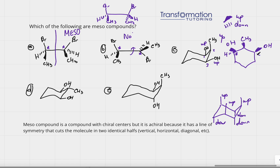Now looking at the middle carbon — carbon two — it has CH3 and a hydrogen, but going left and right leads to the same thing: a carbon with OH, then carbon, carbon, carbon. So going both directions is identical, meaning carbon two is not a chiral center. There are only two chiral centers in this molecule: carbons one and three.